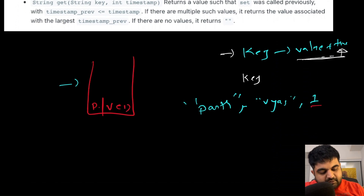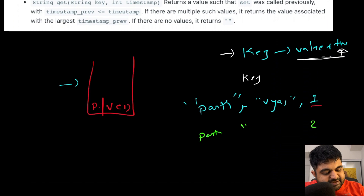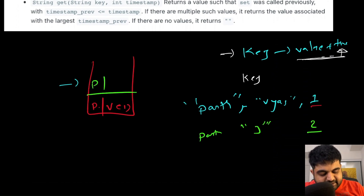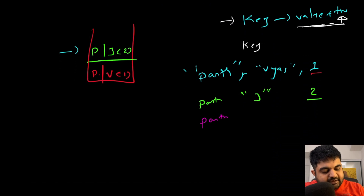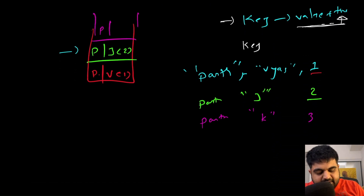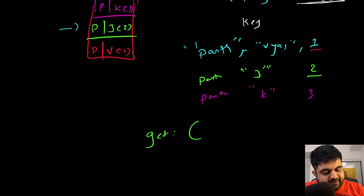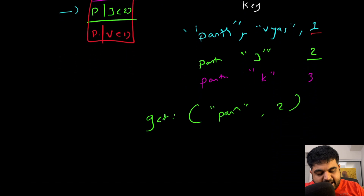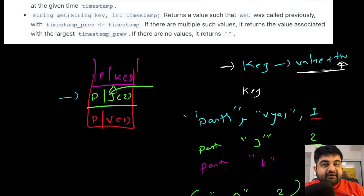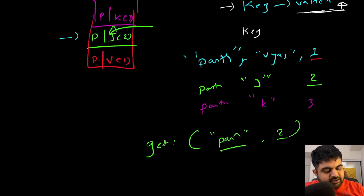At timestamp 2, I provide key 'path' again with value 'J' and timestamp 2. So we store key P with associated value J at timestamp 2. Then once again for key 'path', value is 'K' and timestamp is 3. So we have another entry: key path, value K, timestamp 3. Now for a get operation, I provide key 'path' and timestamp 2. The answer I should receive back would be 'J', because J was the value stored for key path at timestamp 2. So this returns J.